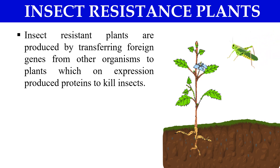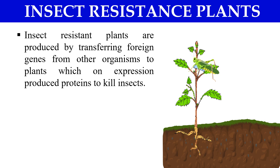For example, if this is a plant and the insect tries to eat it, due to the gene which gives resistance against this particular insect, that gene will code for a toxin. If the insect eats the plant, the toxin will go inside the insect body and it will die. That is the basic principle of insect resistance plants — they contain genes that give the plant resistance against particular insects.